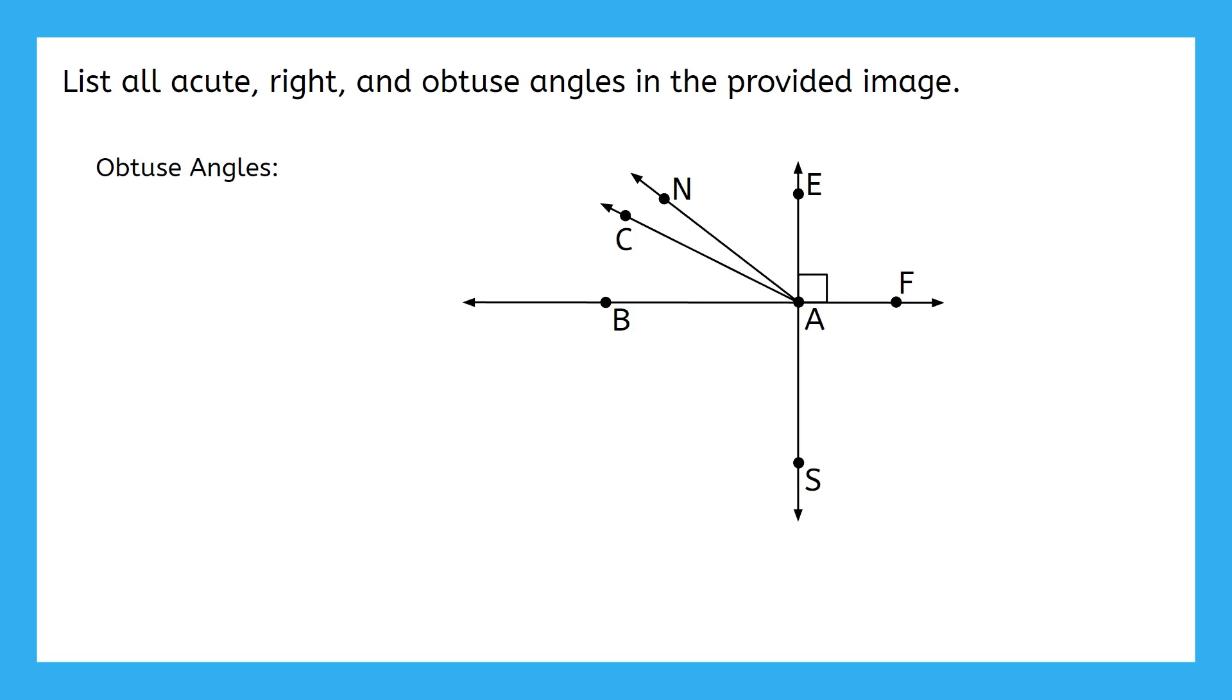Were you able to find all the obtuse angles? Remember that obtuse angles are more than 90 degrees. So, if we can take a right angle and add an acute angle to it, that'll make it obtuse. For example, here is a right angle, and adding this little angle to it will make it more than 90 degrees, but still less than 180 degrees. That gives us angle NAF as an obtuse angle.